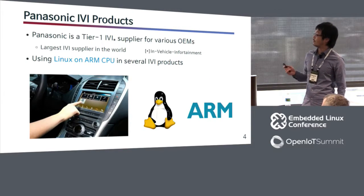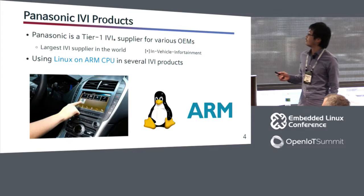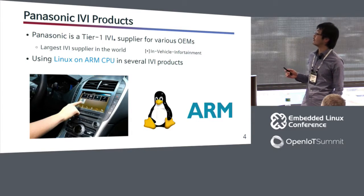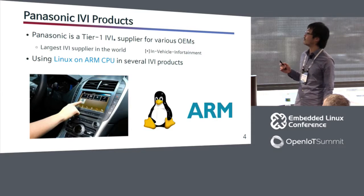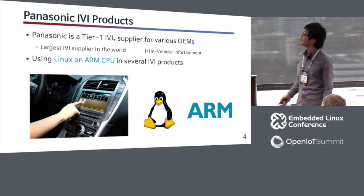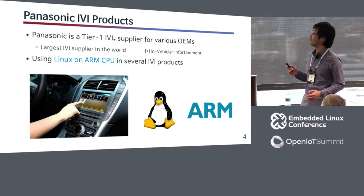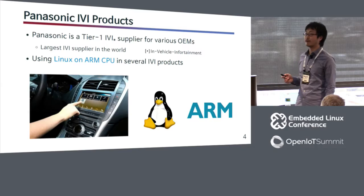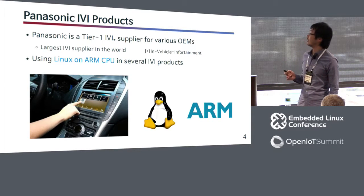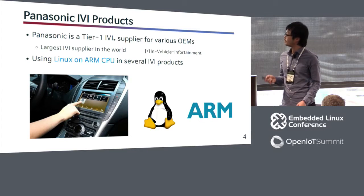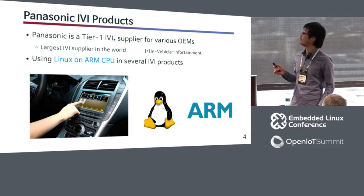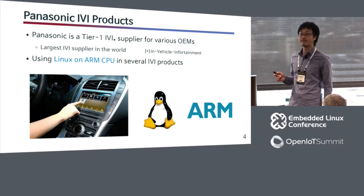I'm working at Panasonic developing IVA products — in-vehicle infotainment products — with Linux. Panasonic is a Tier 1 IVA supplier for various OEMs and is also the largest IVA supplier in the world. Recently, we are using Linux on ARM CPU in several IVA products.